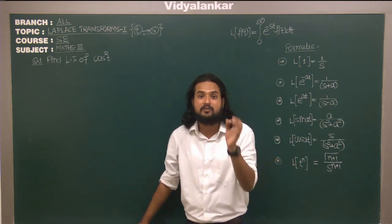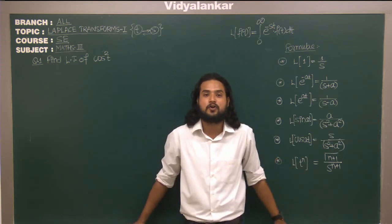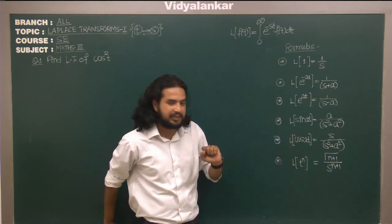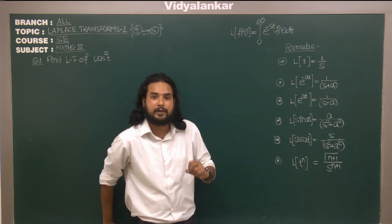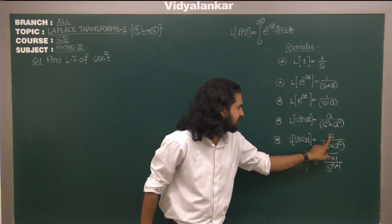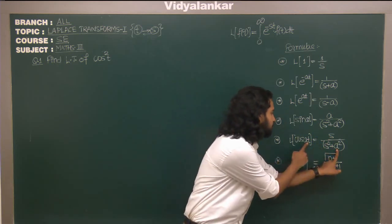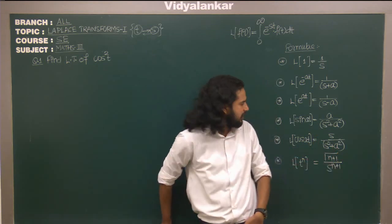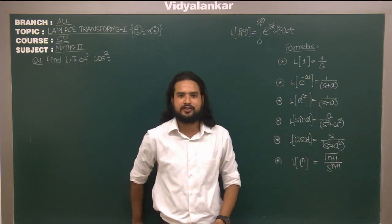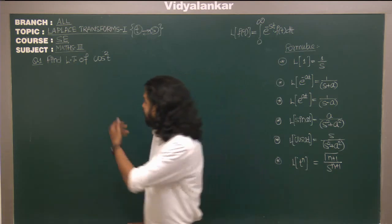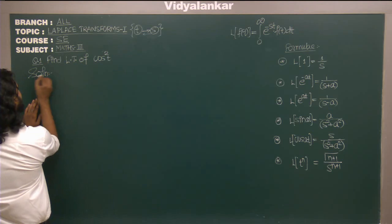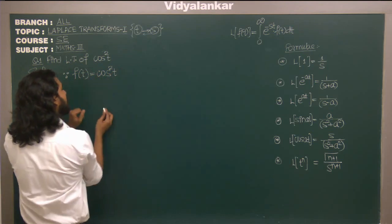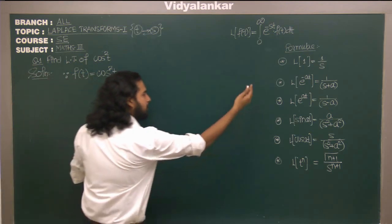Find Laplace transform of cos square t. Now in the list of formulae I have cos, so if somebody says cos 2t Laplace transform, then it is s upon s square plus 4. Here they are asking cos square t. Do I have any formula for cos square t? Obviously there is no formula. So how do I solve this? To solve this I need to convert this into something so that I can apply these formulae.